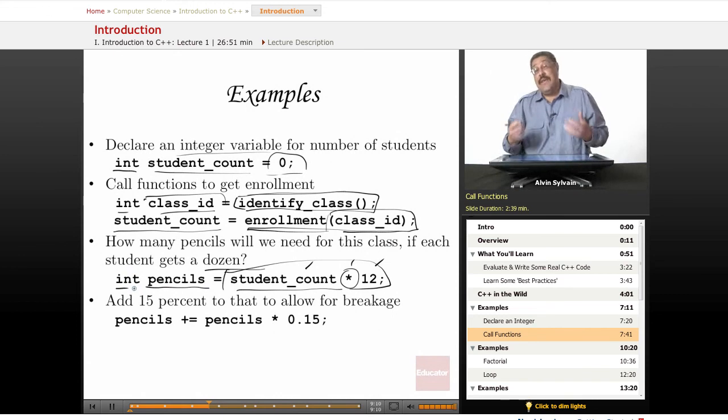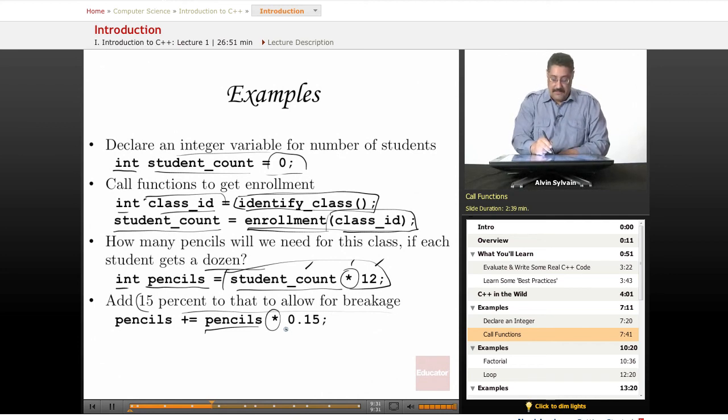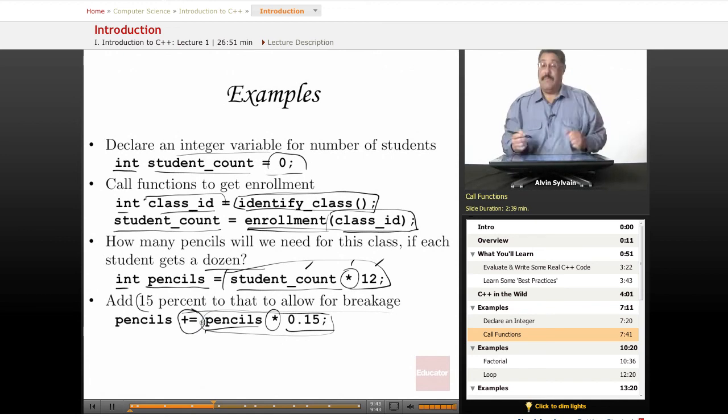And that is an integer because it is a counting number. You can't have seven and a half. Well, actually you could have seven and a half pencils if you break one in half. We don't buy them that way. We buy them as integer whole numbers of pencils. Now we need to add 15% because there are some people who break them in half. There's people who chew on them, there's people who use them too much. So we will take the number of pencils we calculated already. We'll multiply it by 0.15, which is 15%. This is another expression.